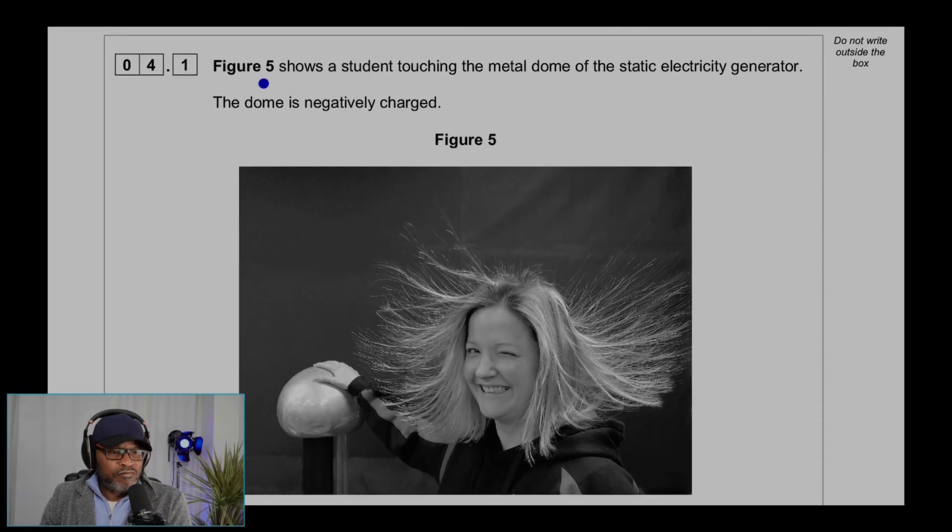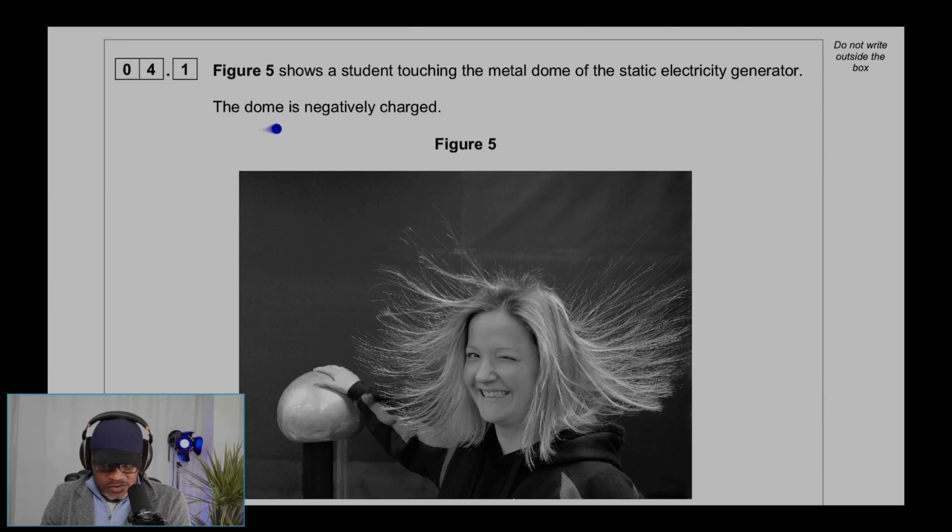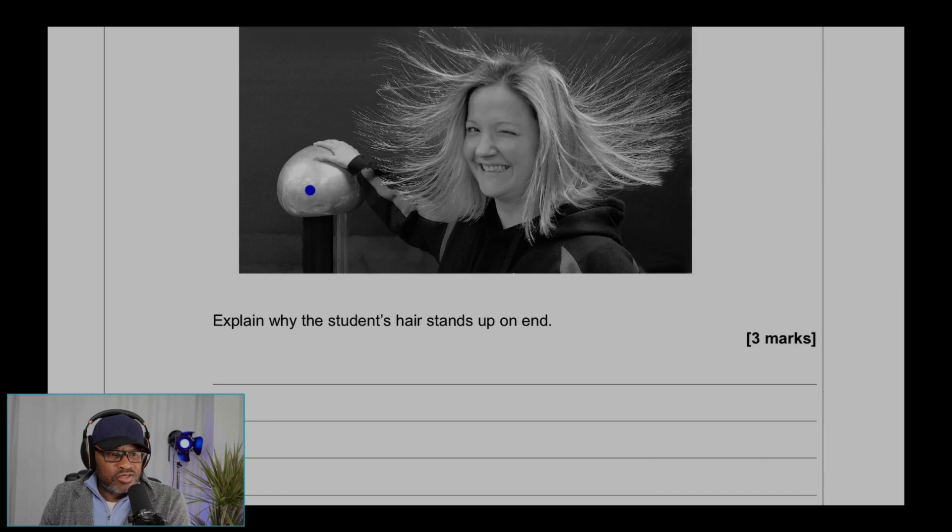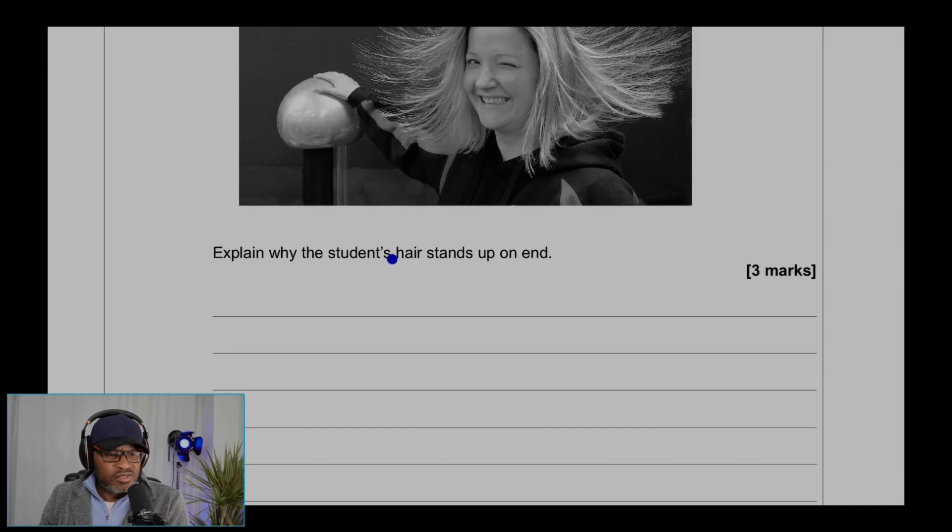Question 4.1. Figure 5 shows a student touching the metal dome of the static electricity generator. The dome is negatively charged, and here is the student touching it, and her hair is spread out. Explain why the student's hair stands up on end.